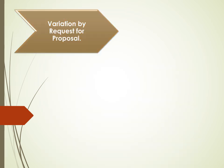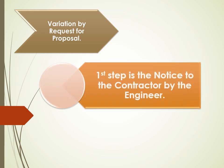Variation by Request for Proposal. The first step is the Notice to the Contractor by the Engineer. Before instructing a Variation, the Engineer is to give the Notice to the Contractor that defines and describes the proposed changes.